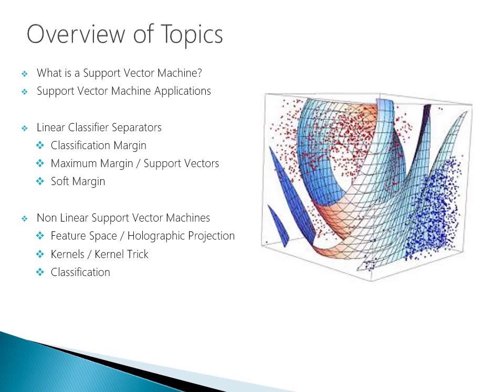Finally, we'll talk about non-linear Support Vector Machines. We'll get into some feature space, holographic projection, the kernels and kernel trick classification. This is some of the higher level concepts that are really kind of tricky to understand, but they're very cool when we're talking about higher dimensional spaces. And then we're going to dive into a practical application example, where we're going to classify breast cancer. We're going to utilize a Support Vector Machine to aid in this classification.